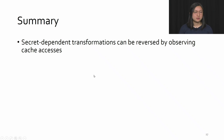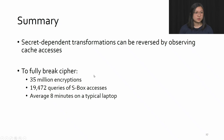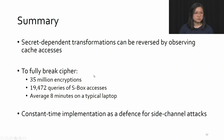To summarize: PoSung's secret-dependent transformations can be reversed by observing cache accesses. To fully break the cipher, we perform around 35 million encryptions and around 19,500 queries of S-box accesses. On average, it takes about eight minutes to run on a typical laptop. We show that constant-time implementation is needed as a defense for side-channel attacks.